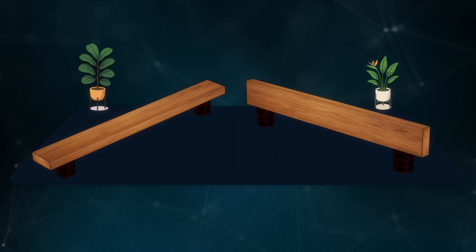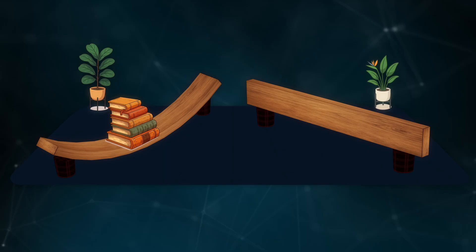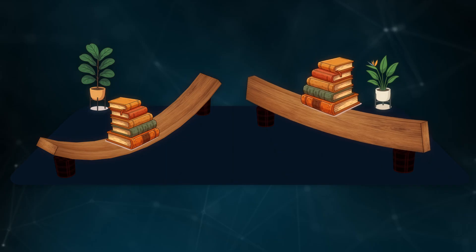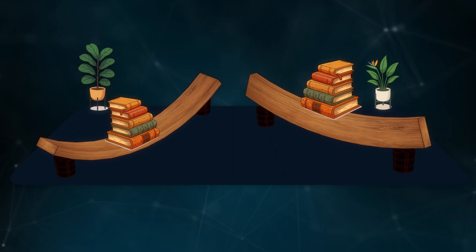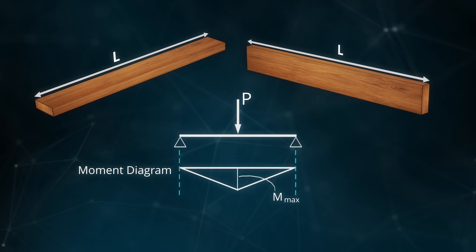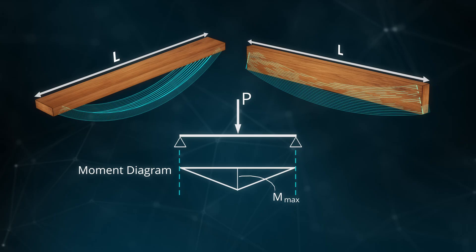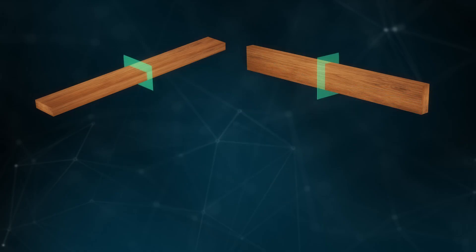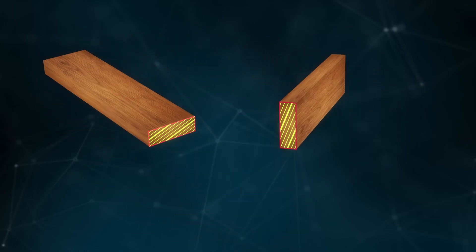Put the books on the left shelf. Under the load, the shelf will bend — it seems to have bent a bit too much. Now place the same books on the right shelf. It looks stiffer under the load. The boards have the same length and the load is applied at the same point, so the bending moment and shear force are the same. Placing the board on edge makes the shelf deflect less. This effect comes from the sections having different area moments of inertia.